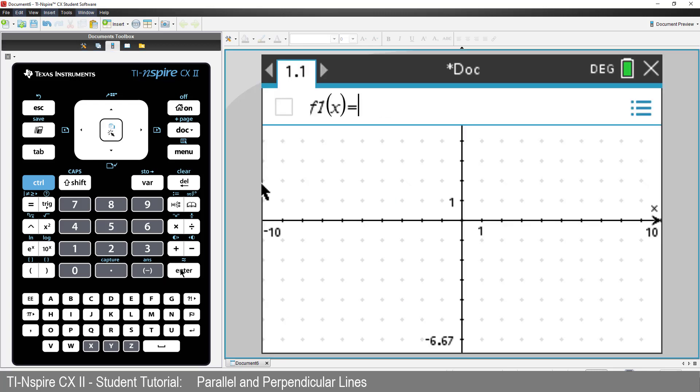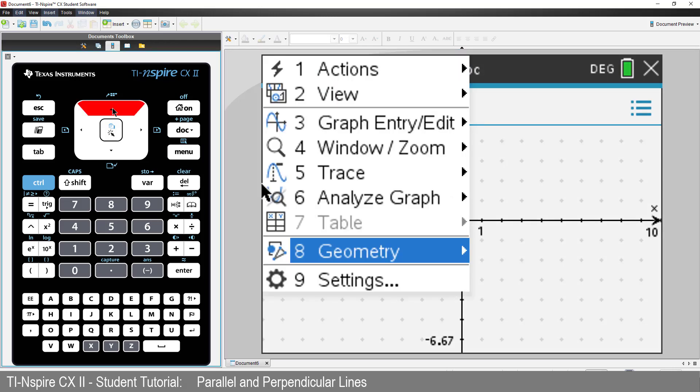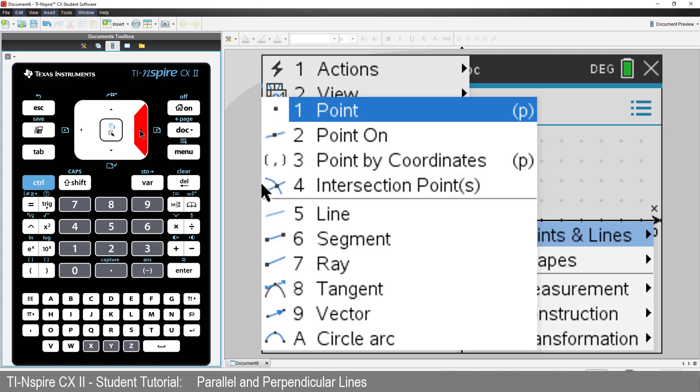Let's start by drawing a line. Press Menu, Geometry, Points and Lines and select Line.